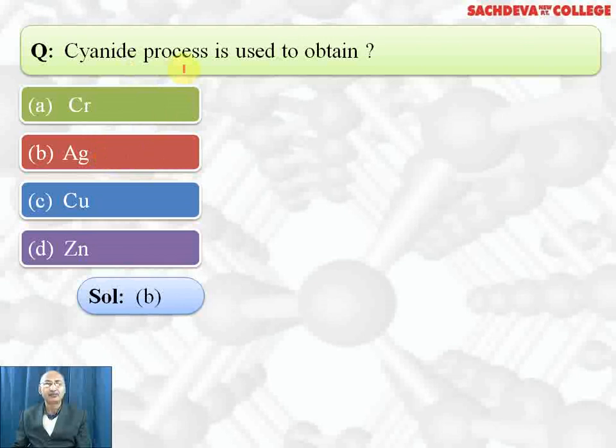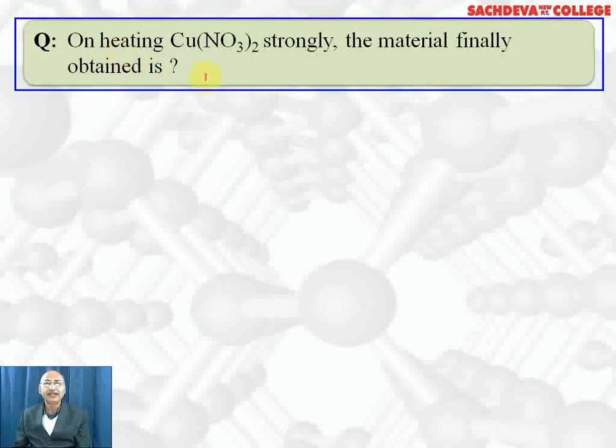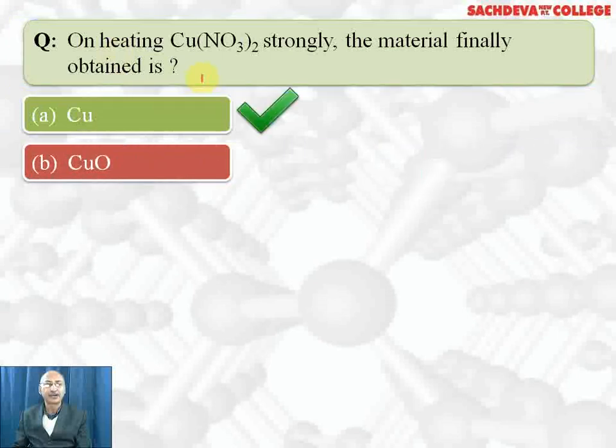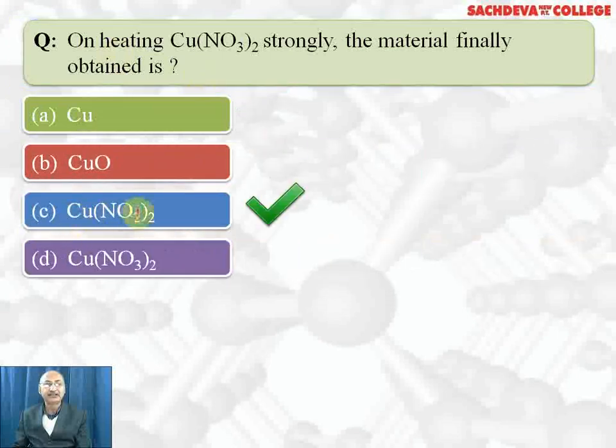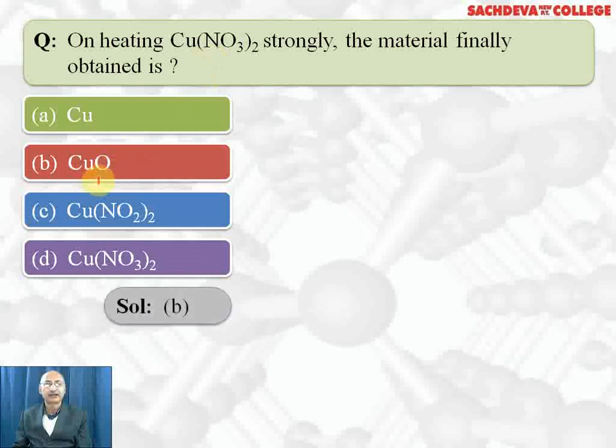On heating copper nitrate strongly, the material finally obtained is copper, cupric oxide, copper nitrite, or copper nitrate. Correct answer is cupric oxide. Blue colored copper nitrate on heating gives black colored copper oxide plus NO2 plus oxygen is formed. So correct answer is B part.